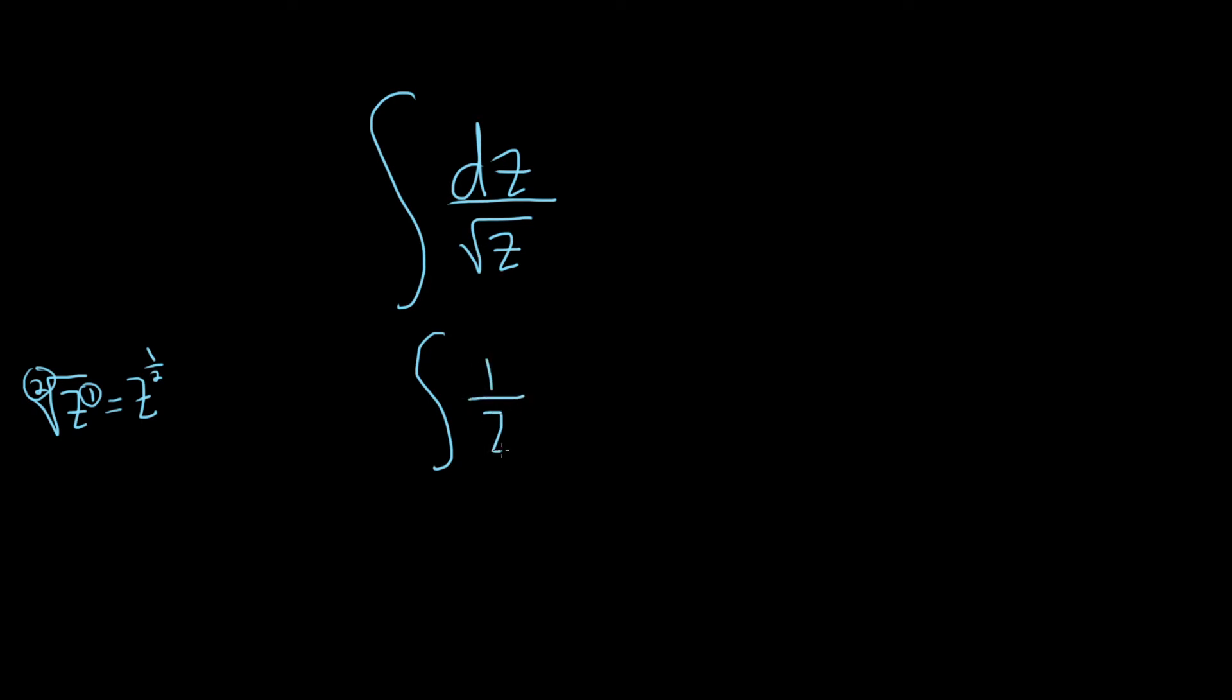Two, we can really separate everything like this. So this is 1 over z to the 1 half, using this rule. And we can put the dz here on the right-hand side. These are really the same thing as what you have here.